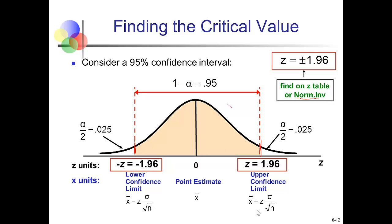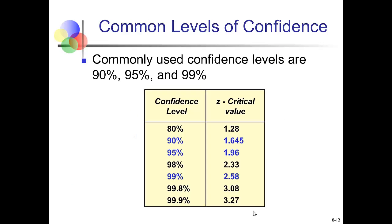The most commonly used levels of confidence are 90%, 95%, and 99%. The Z-critical value for 90% is 1.645, and for 95% it's 1.96. These critical values tell us how many standard errors we need to subtract from and add to the sample mean to get the lower and upper bounds of the confidence interval.